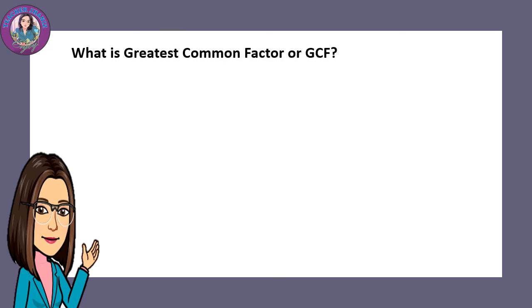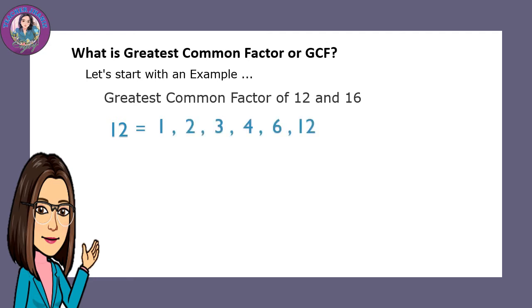What is greatest common factor or GCF? Let's start with an example. Greatest common factor of 12 and 16. We will list all the factors of 12, which are 1, 2, 3, 4, 6, and 12. Next are the factors of 16, which are 1, 2, 4, 8, and 16.